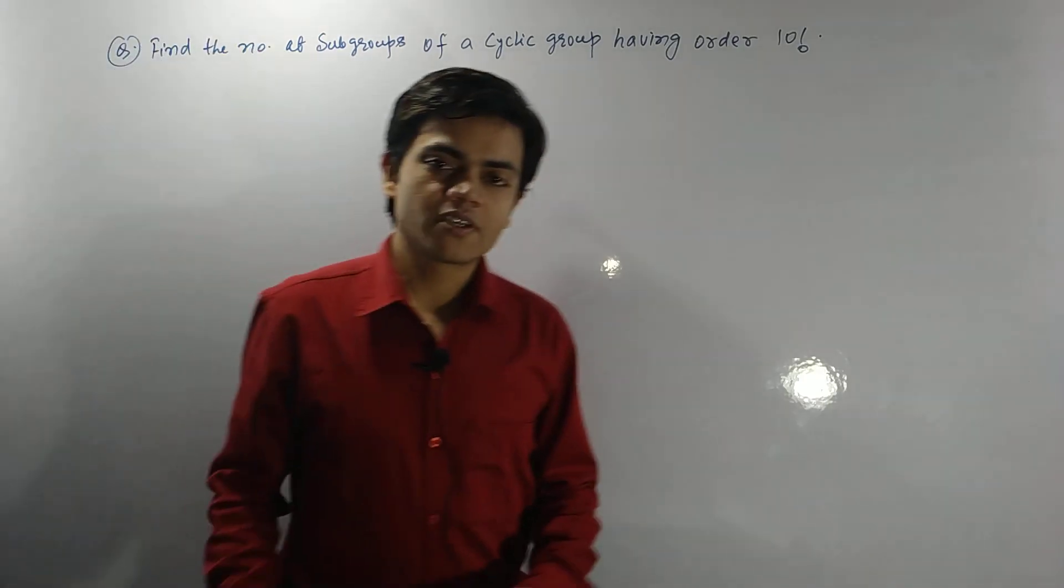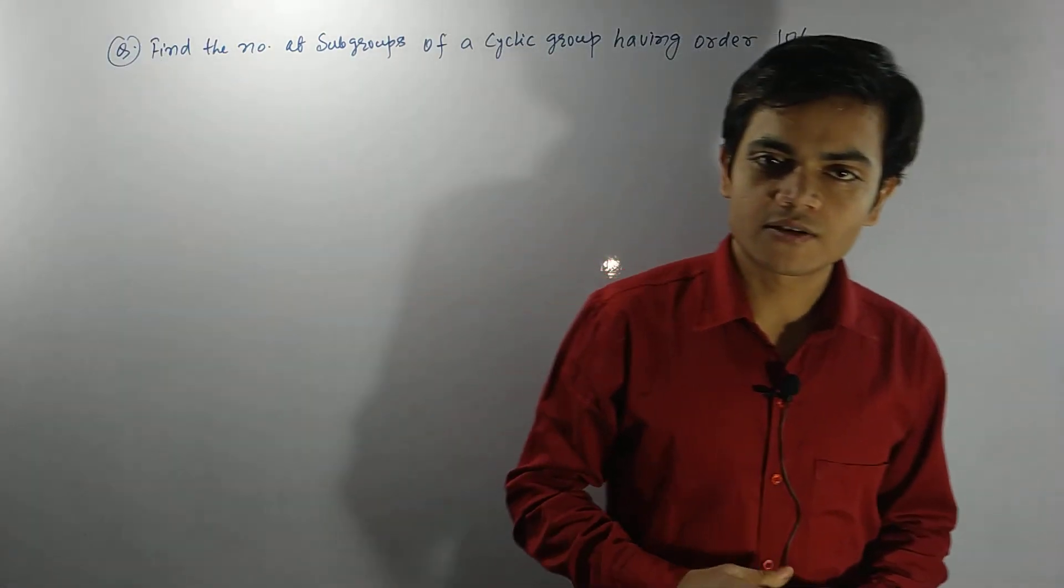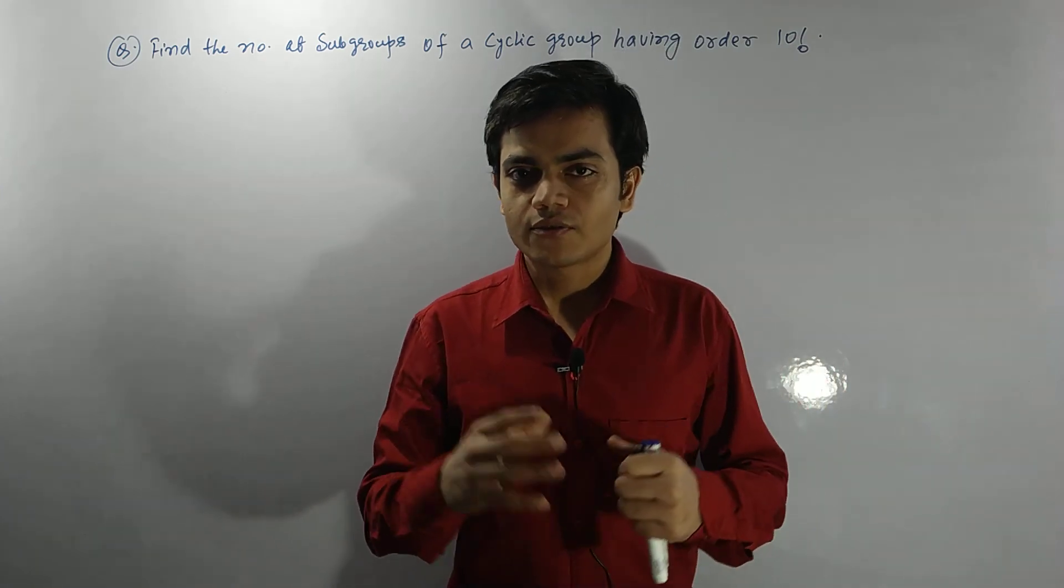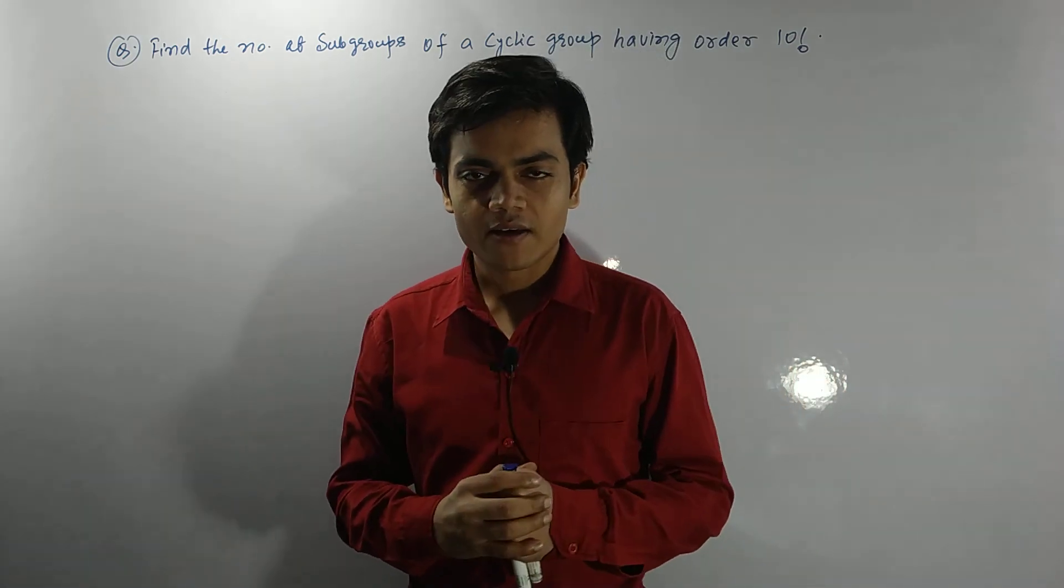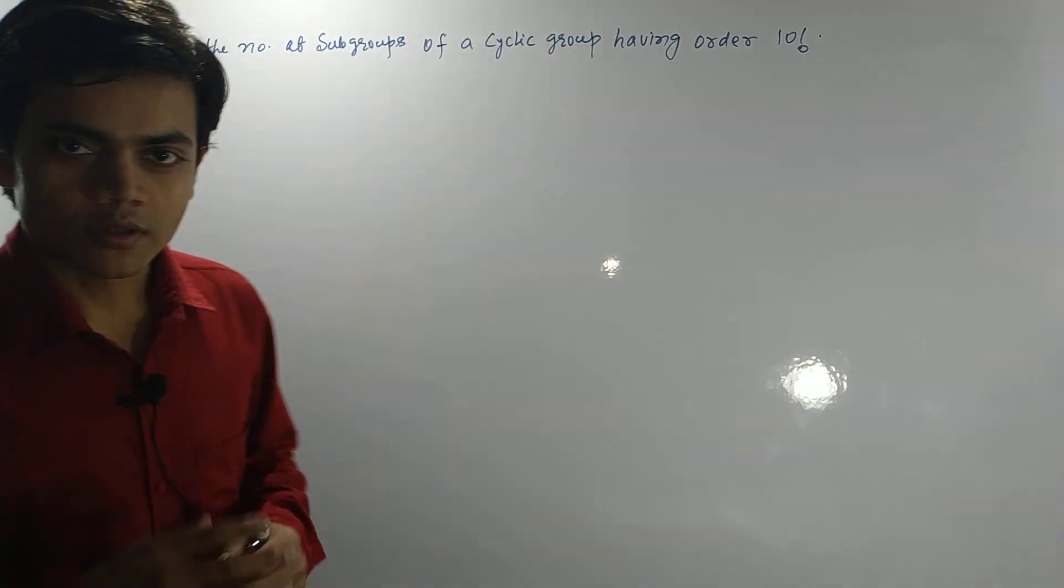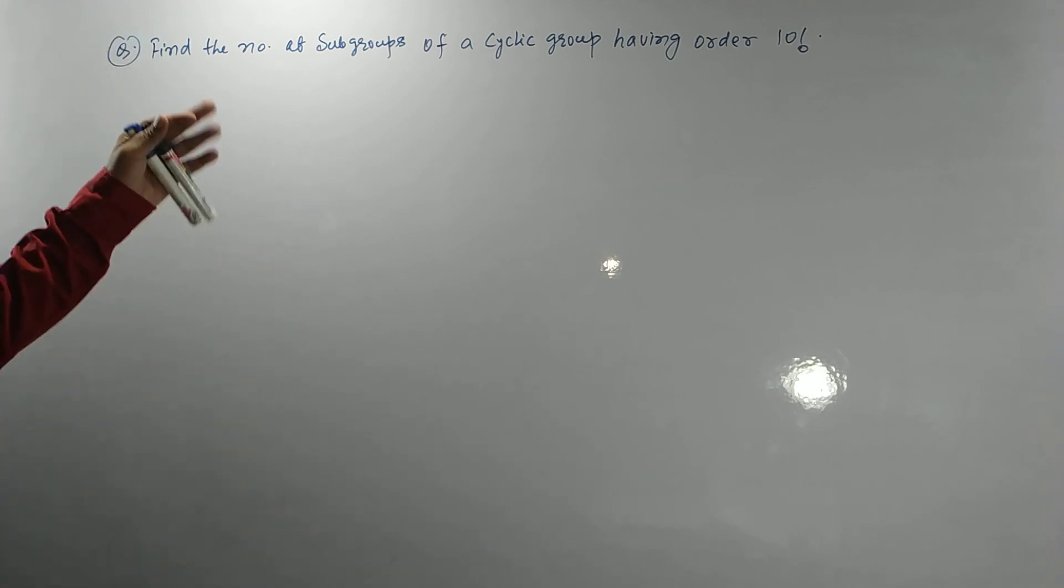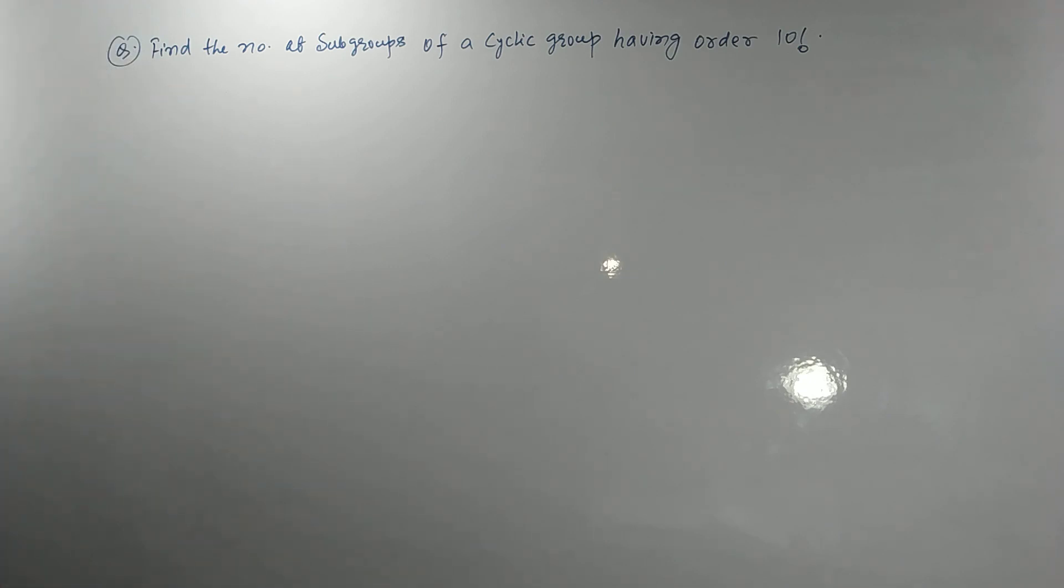Hello everyone. In the previous video lecture we discussed the Tau function, and in this video lecture we are here with a question on the application of that function. The question is: find the number of subgroups of a cyclic group having order 10 factorial.